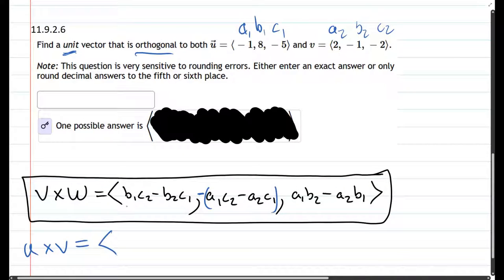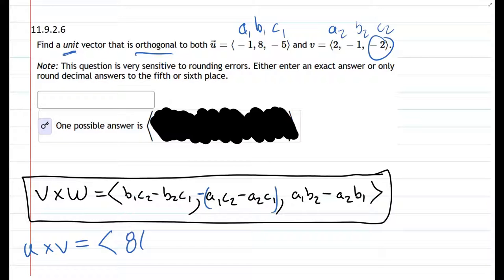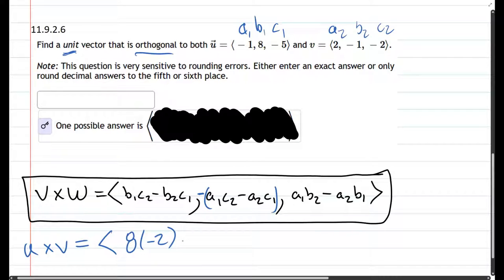Alright, let's write down all of these. So we're starting with b1, which is 8, times c2, which is negative 2, minus b2, that's negative 1, times c1, which is negative 5. So that's just the x coordinate.